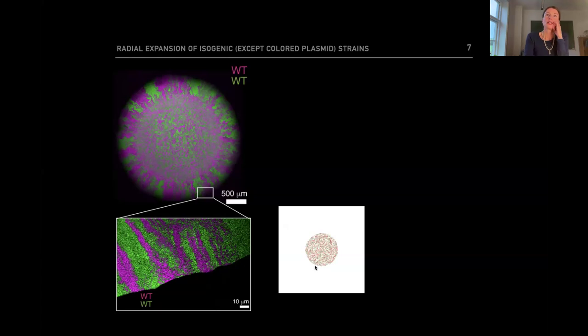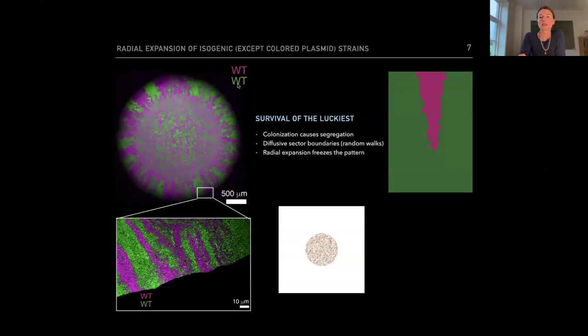Next, what we did was to let them compete against themselves. Here we have two of the longer cells, the wild type in green and the wild type in magenta. And we found a pattern of very diffusive boundaries. The more diffusive these boundaries are, the higher are the chance that two boundaries will meet and close off a sector. On top of this, the colony is expanding radially. So, at some point, the chance of two boundaries meeting will be small. And from that point on, the pattern is freezing.